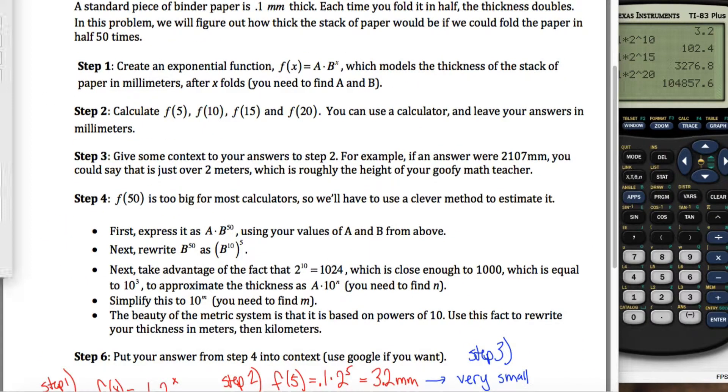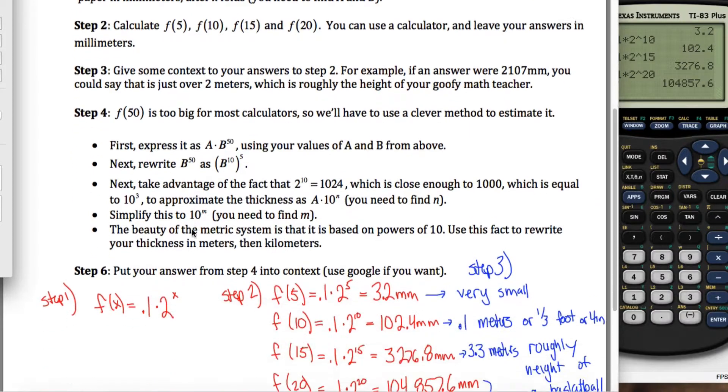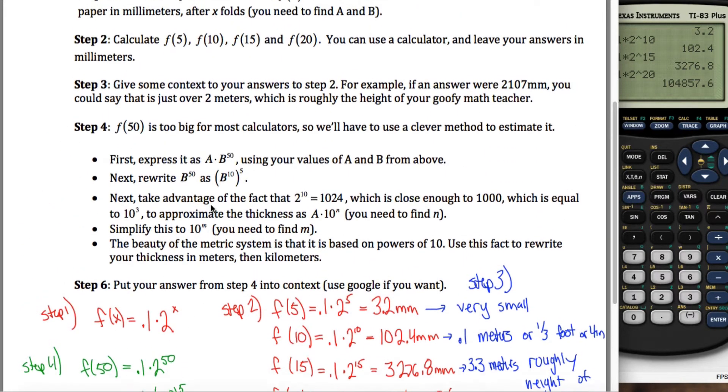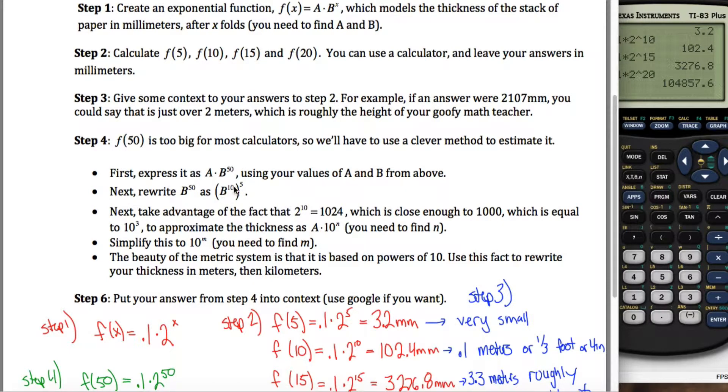Okay, step four is where we finally get to calculating f of 50. So the way we'll do this is we'll say, well, f of 50 is 0.1 times 2 to the 50th power, which is the same as 0.1 times 2 to the 10th power to the 5th. And why did I write it like that? Well, because it told me to right here.